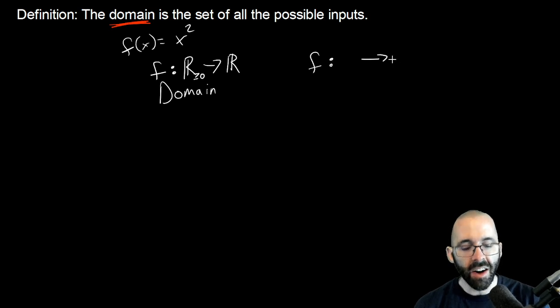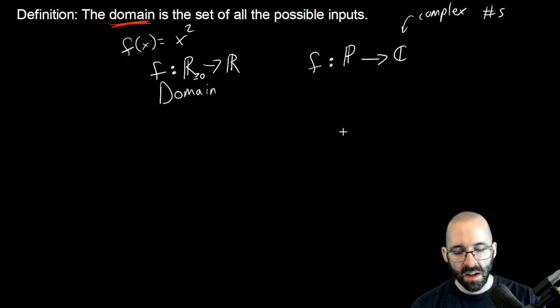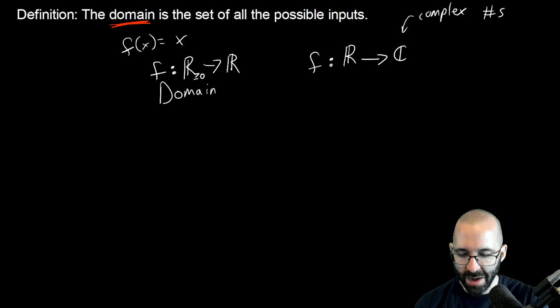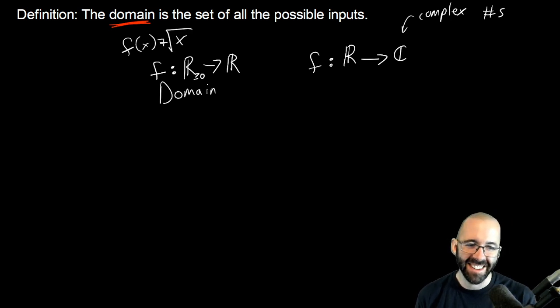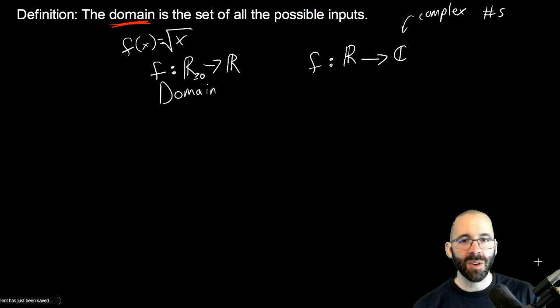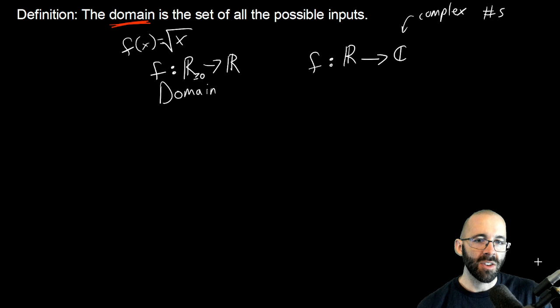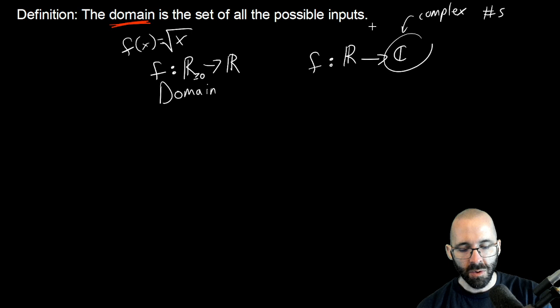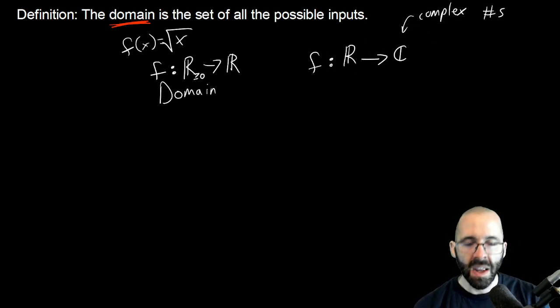But if we let our outputs be complex numbers, now the domain can be any real number. So the domain kind of depends on what really we're talking about. In a traditional math class... oh gosh, you're probably screaming at me right now - I'm talking about the square root function. We can't take the square root of a negative number unless it's complex. So if we're only looking at real valued functions where the output is a real number, then the domain has to be non-negative, but if we're okay with complex numbers then the domain can be all real numbers.